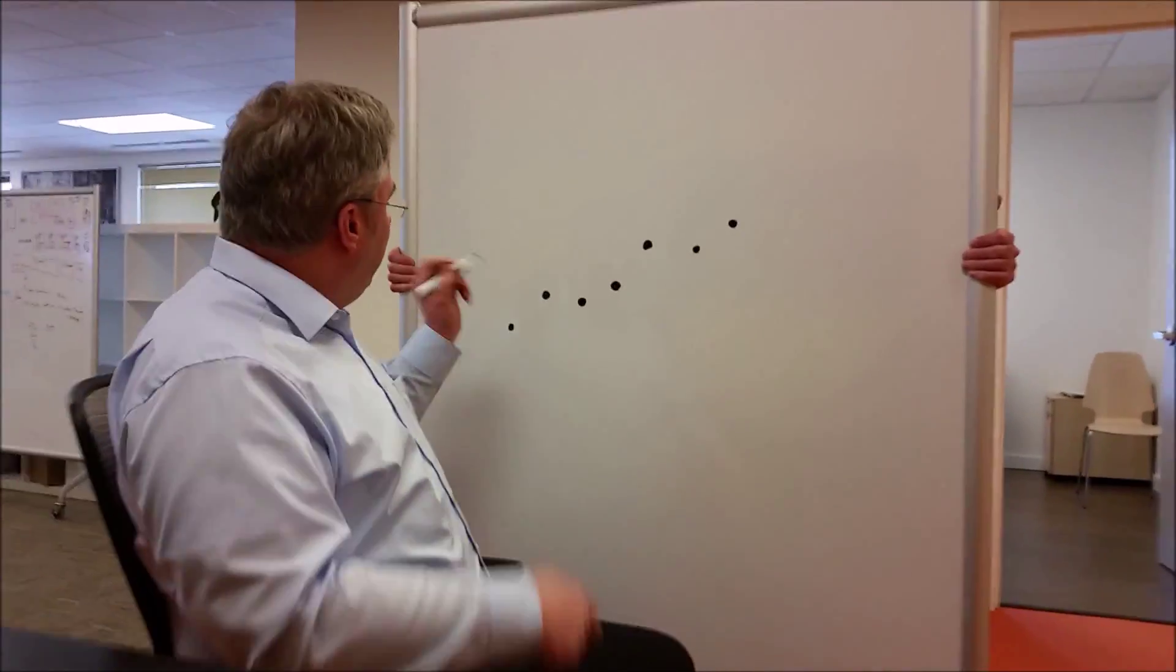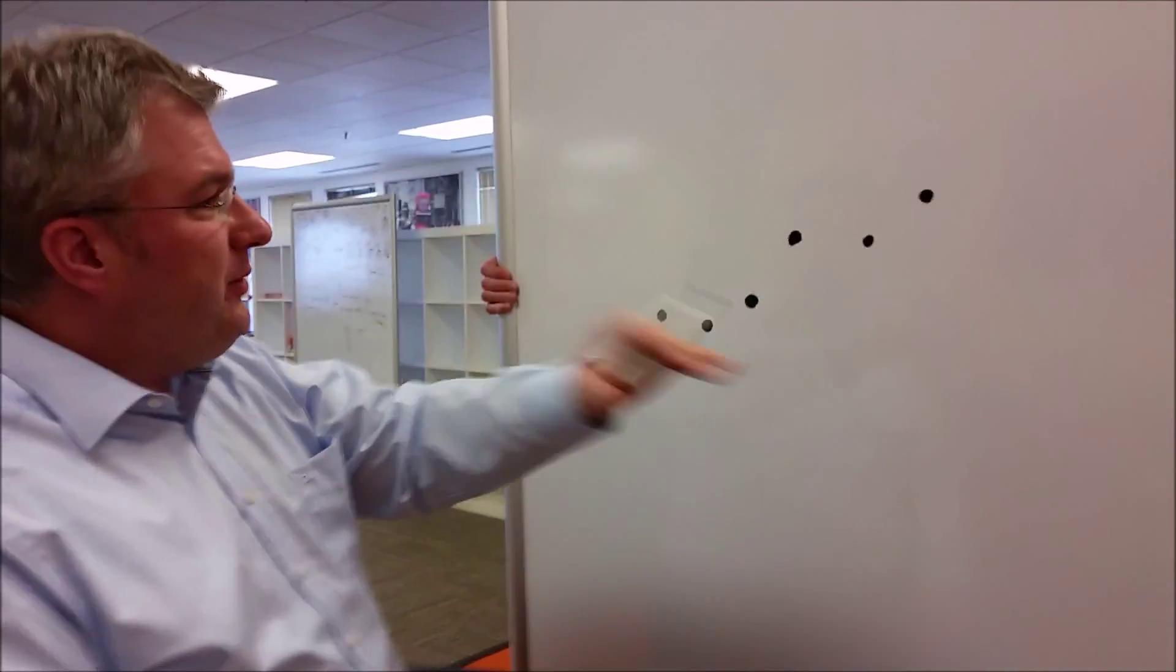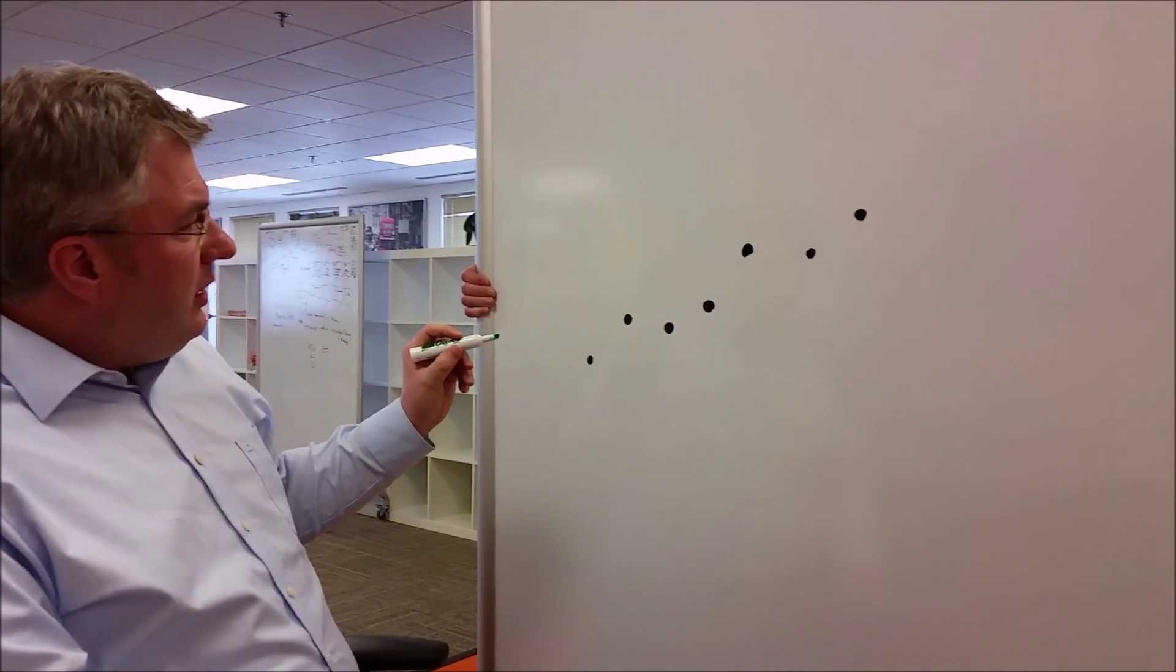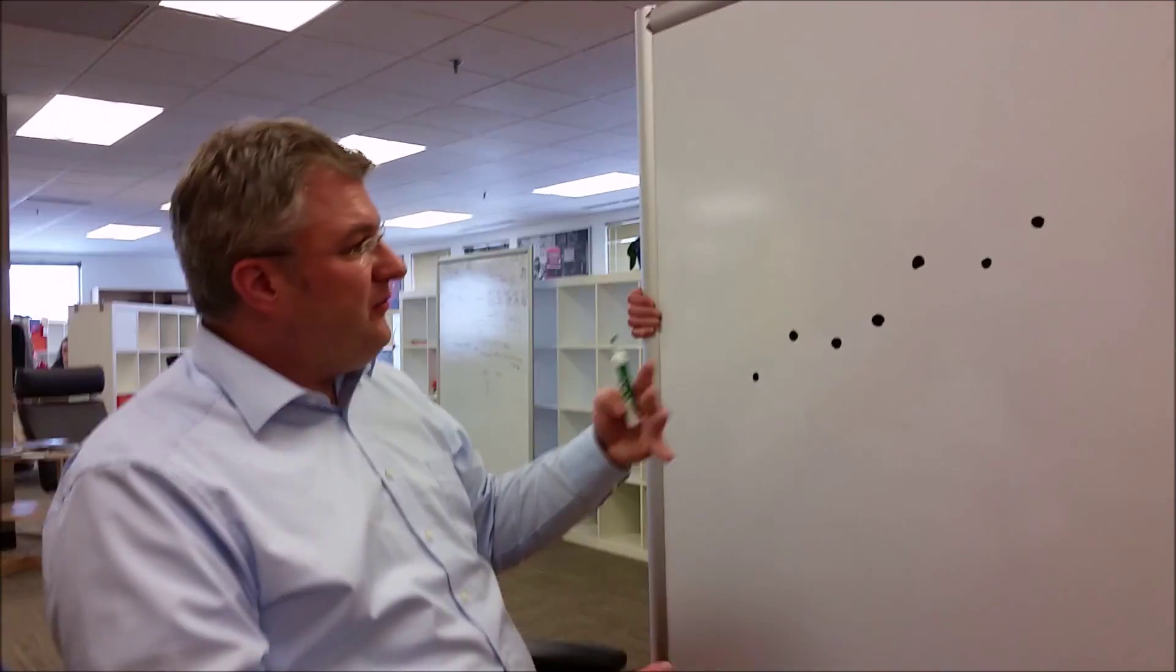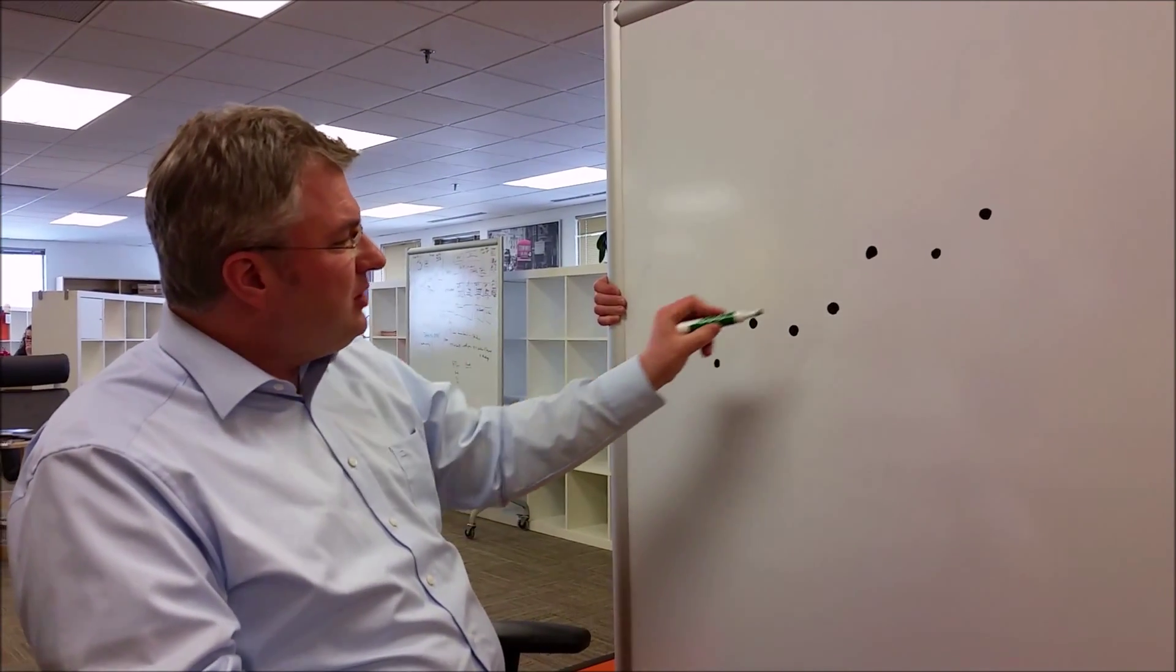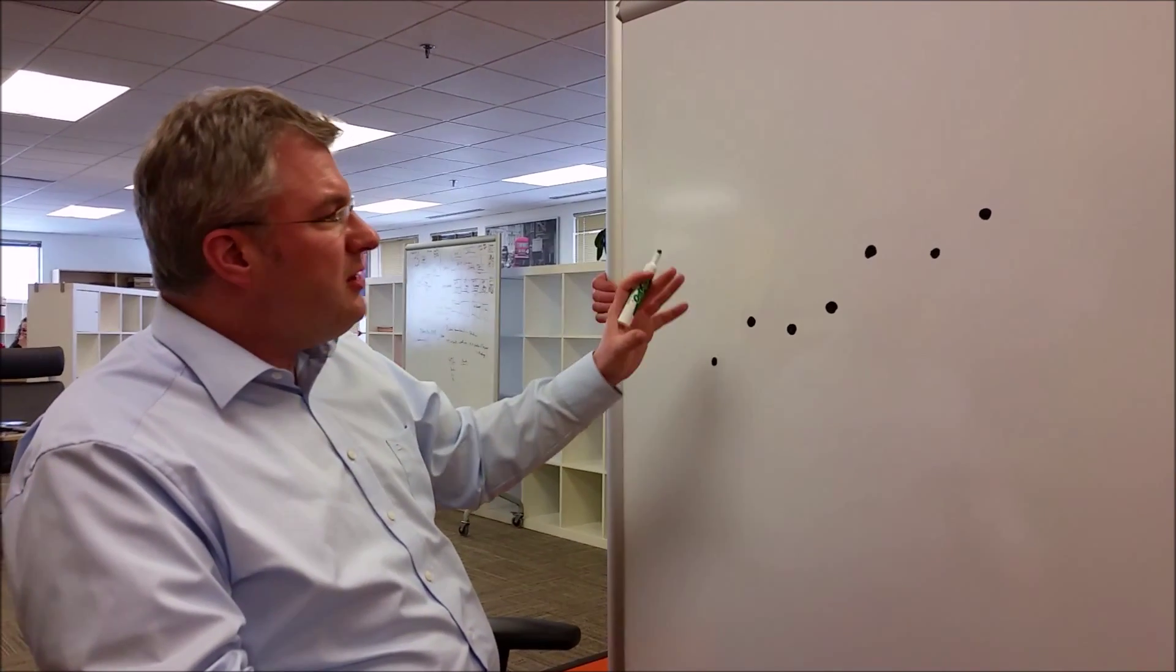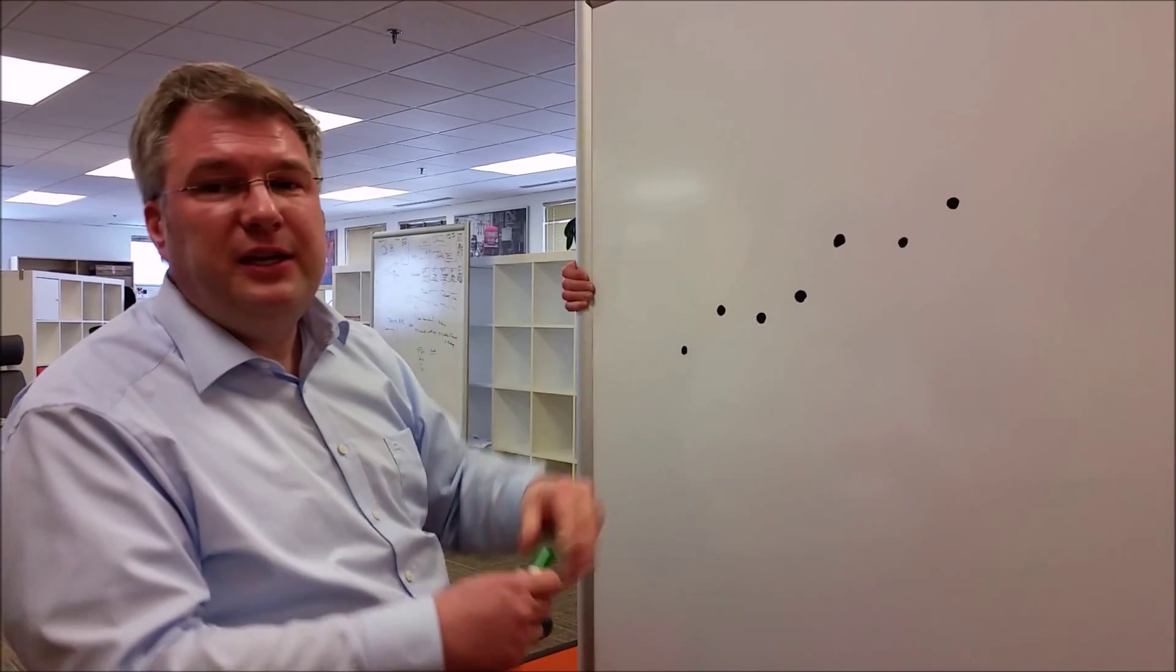So let's have a look. We have a couple of data points here. We have seen this last episode already that we can put data points into this two-dimensional space. I would like to explain those data points by finding a function which explains those data points, for example by touching them, so that you can use the function to predict what is the value, for example, somewhere here.